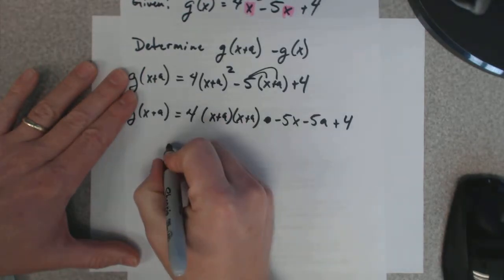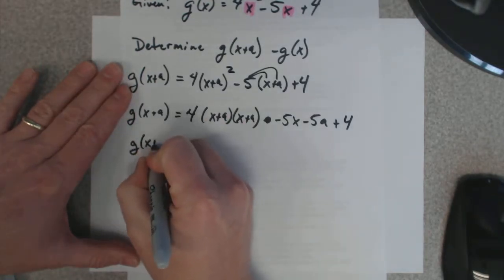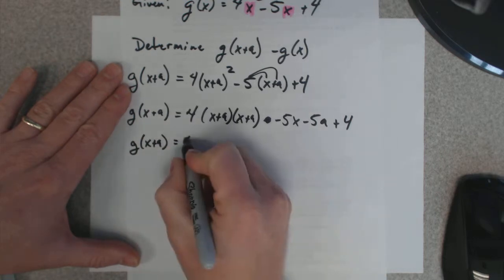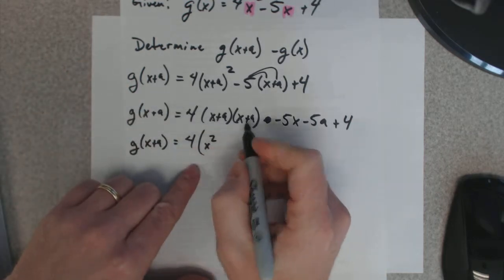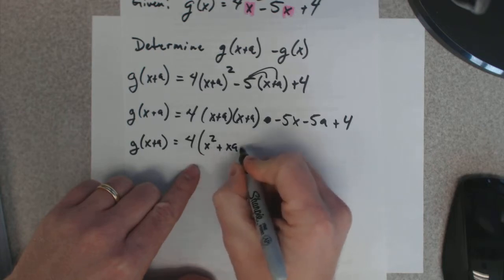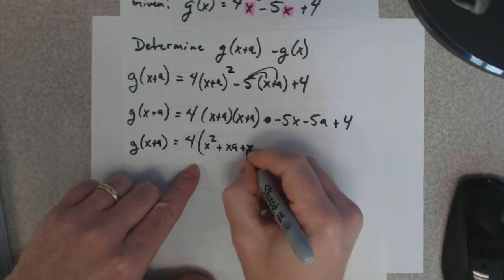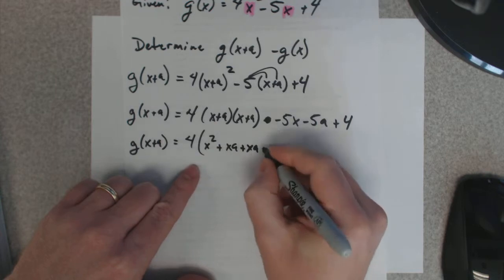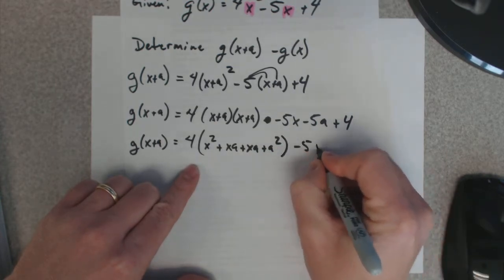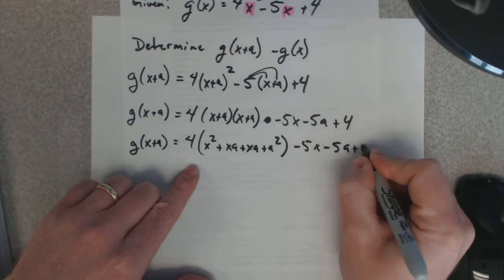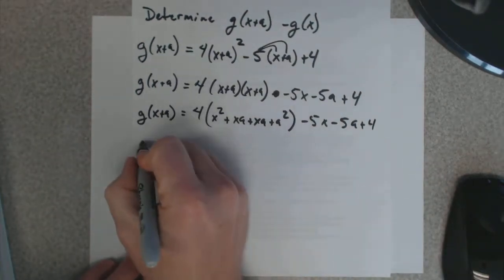Multiply this out here. x times x is x squared. X times a is xa. A times x is xa. A times a is a squared. Minus 5x minus 5a plus 4.